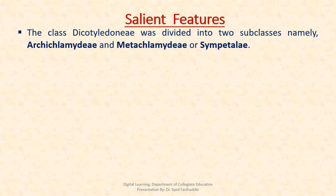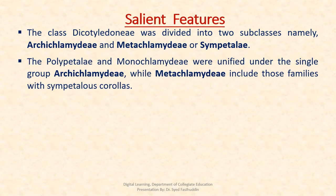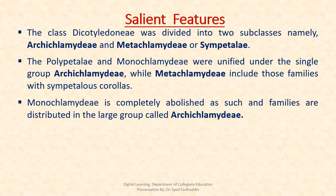The salient features of the Engler and Prantl system of classification: The class Dicotyledoneae was divided into two subclasses, namely Archichlamydeae and Metachlamydeae. The Polypetalae and Monochlamydeae of Bentham and Hooker were unified under a single group called Archichlamydeae, whereas Metachlamydeae includes those families with sympetalous corollas.